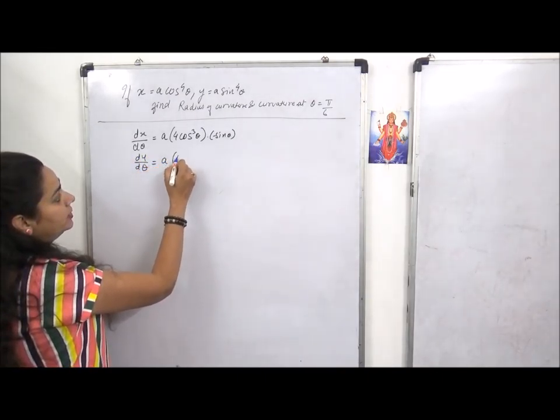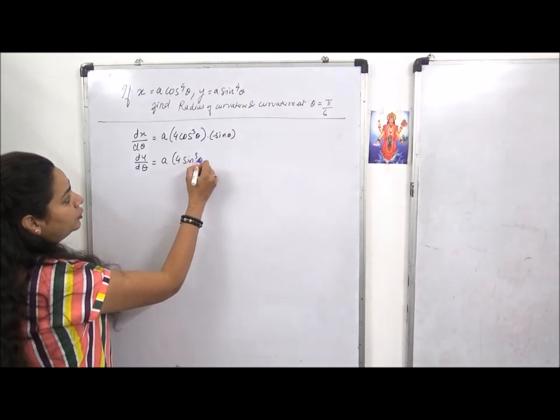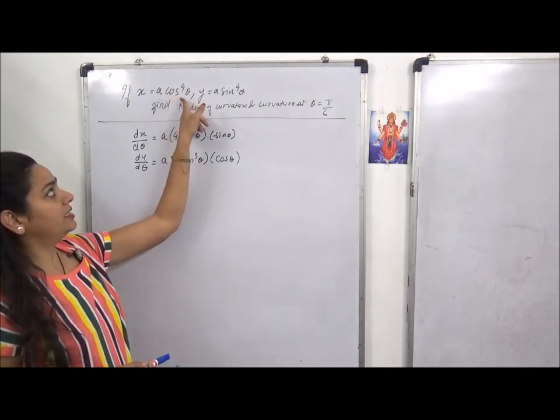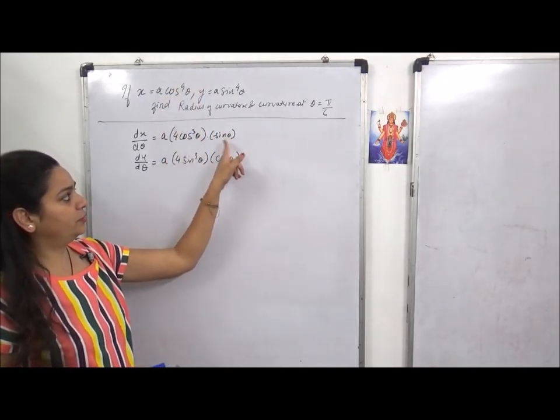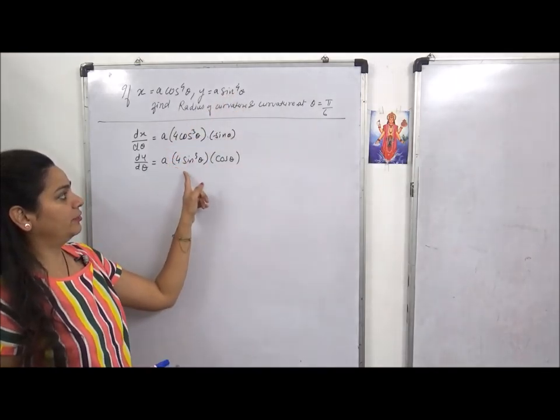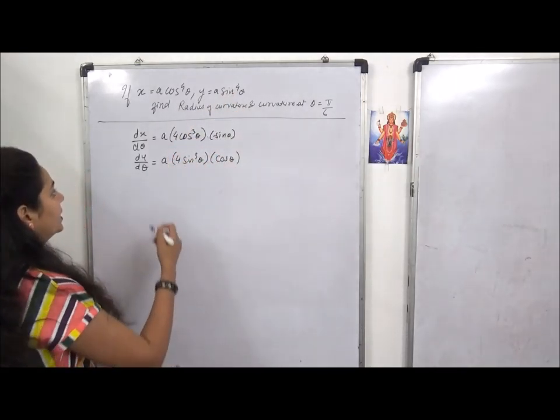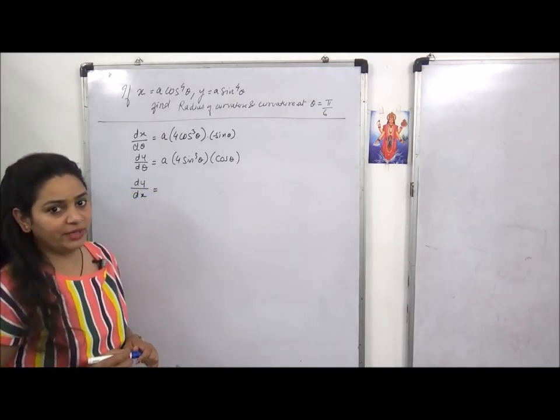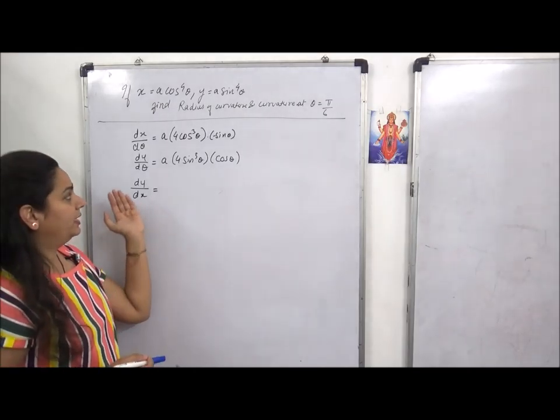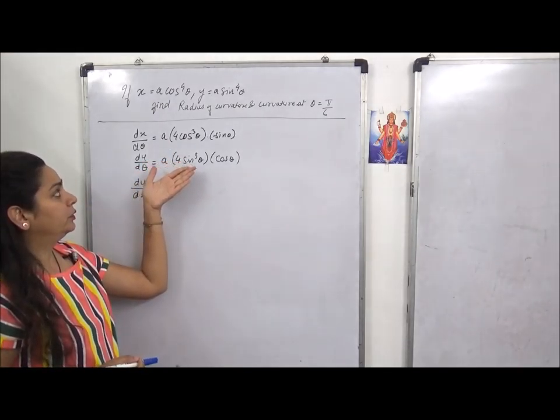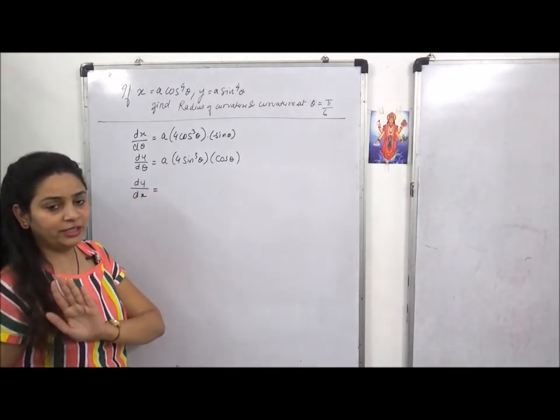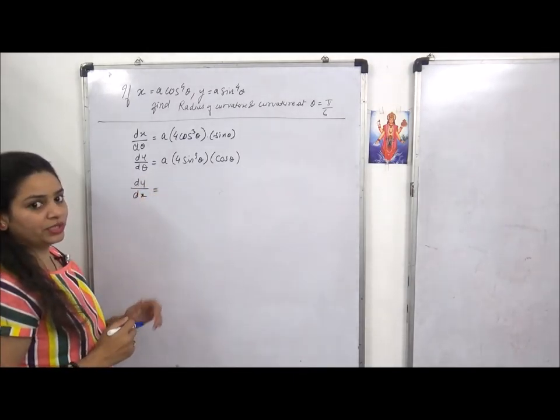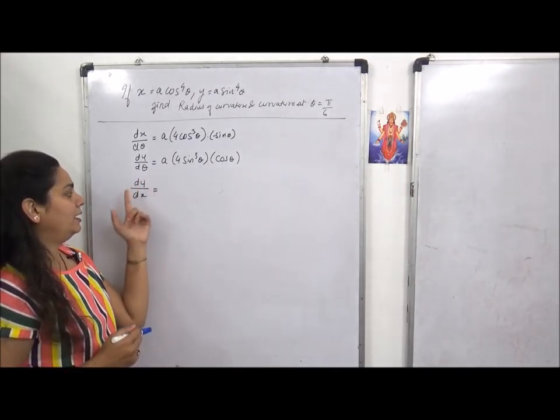We have to differentiate with respect to the function. So first, we do separate derivatives. dx by d theta gives 4a cos cube theta using chain rule, and dy by d theta gives 4a sin cube theta.